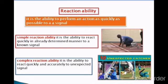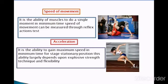In complex reaction ability, unexpected signals come in the form of catches, passes, or kicks in sports. You can see in this picture that players are catching in different situations and taking movement accordingly.